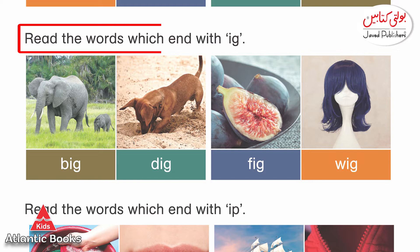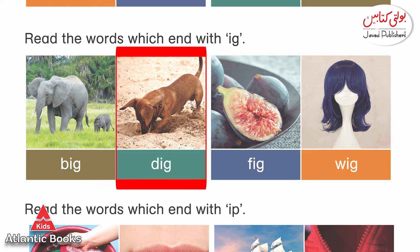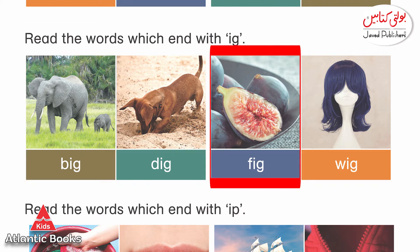The next combination is I and G, which makes the sound 'ig'. The words are: big, dig, fig, wig.